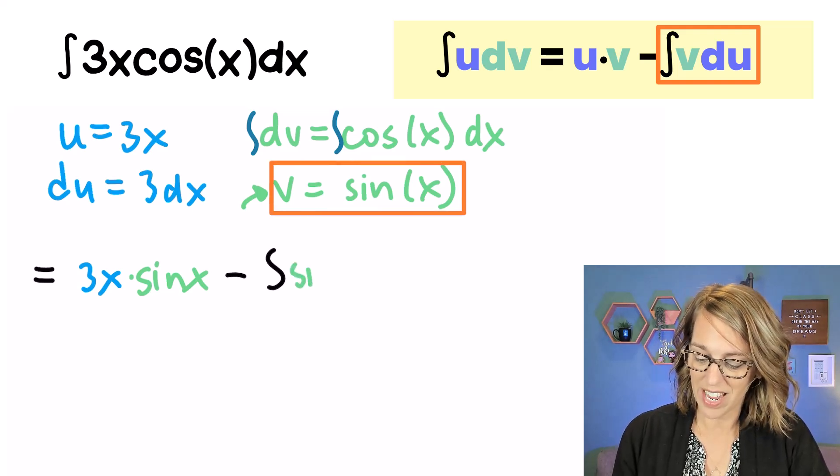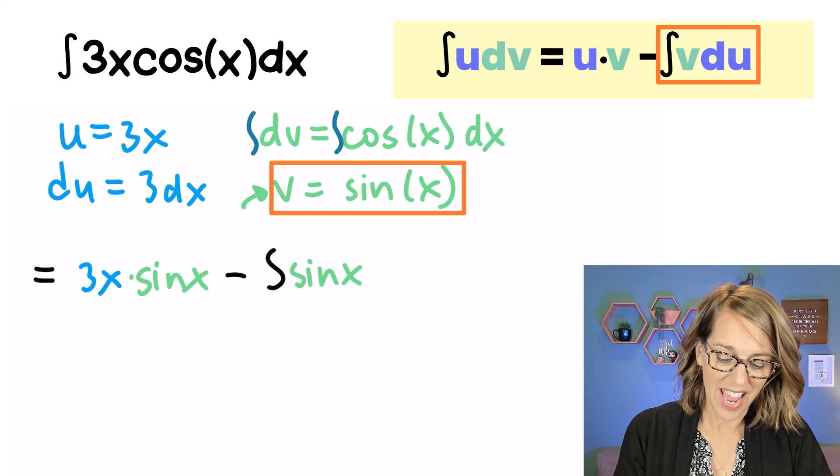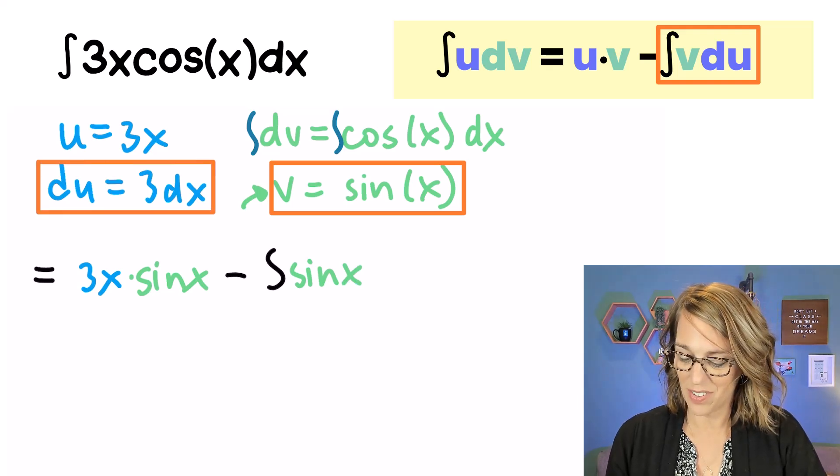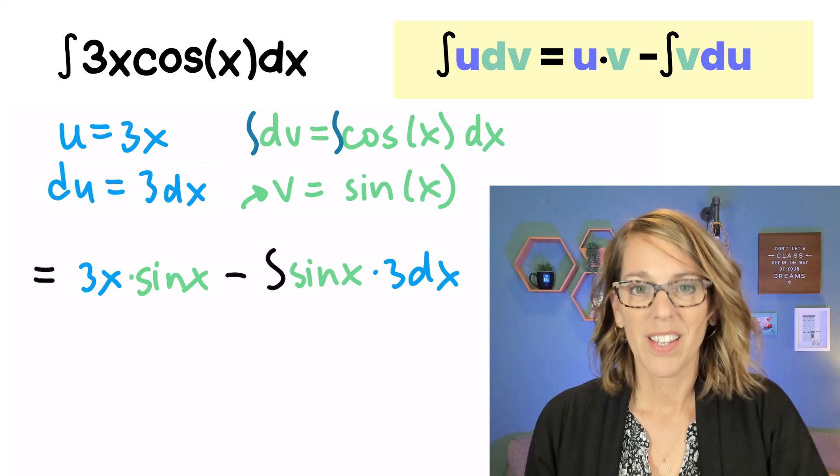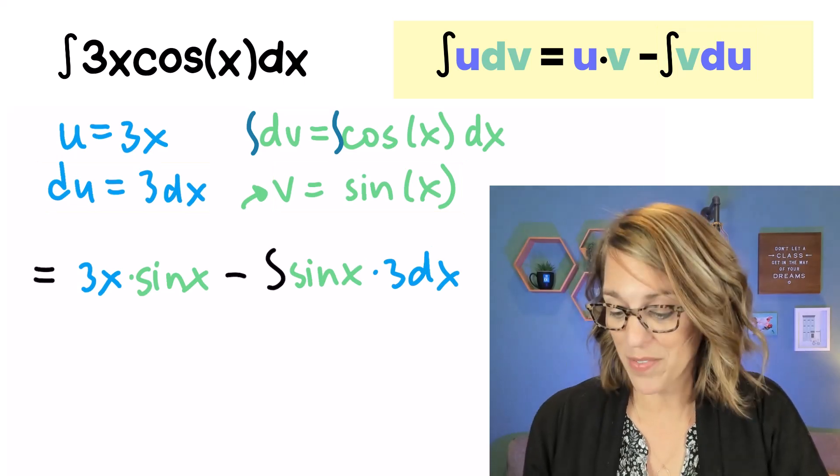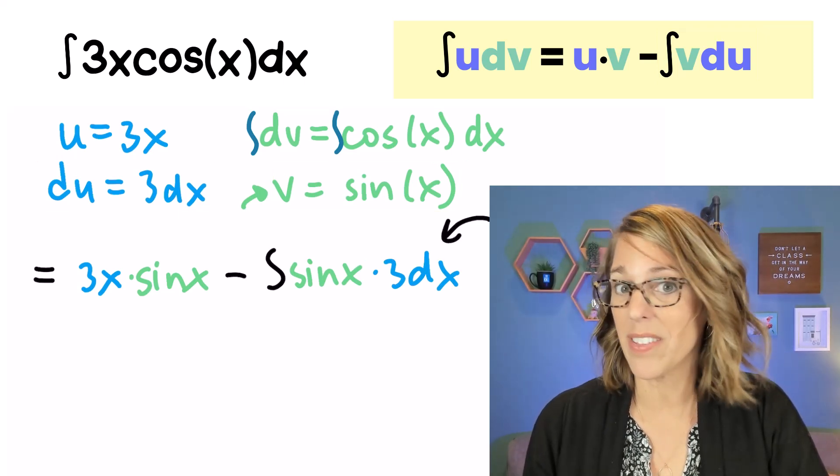So v is, again, the sine of x and du is 3dx. So not only have I integrated part of this, but the integral that I'm left with is doable.